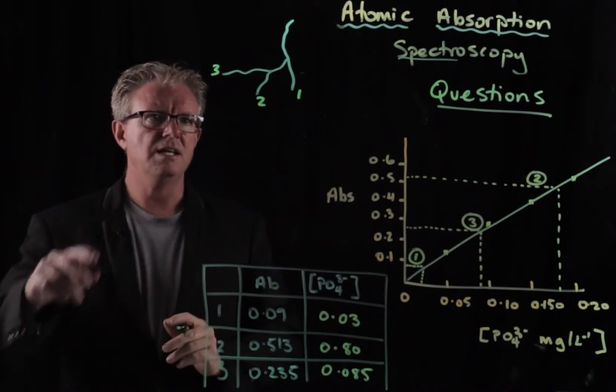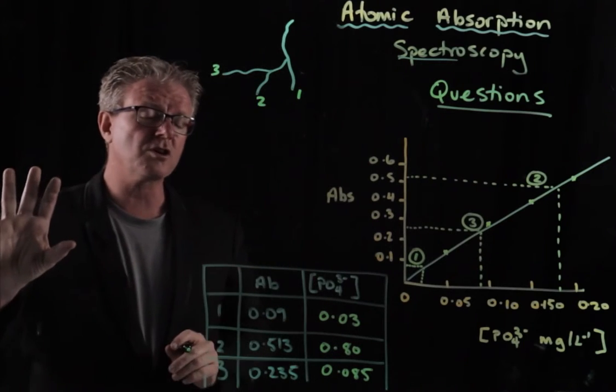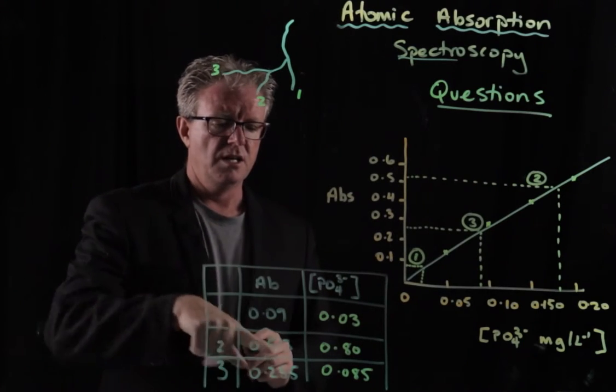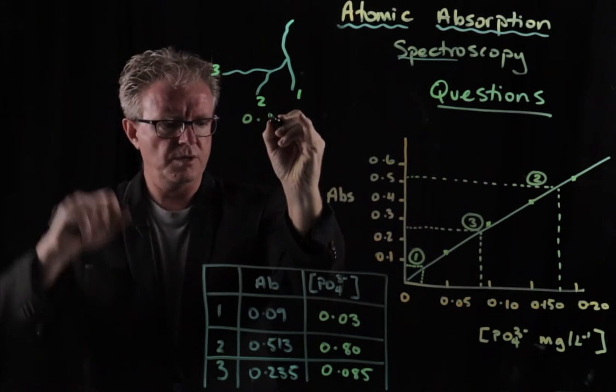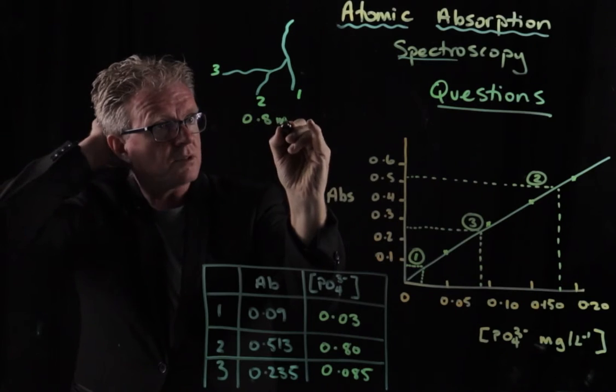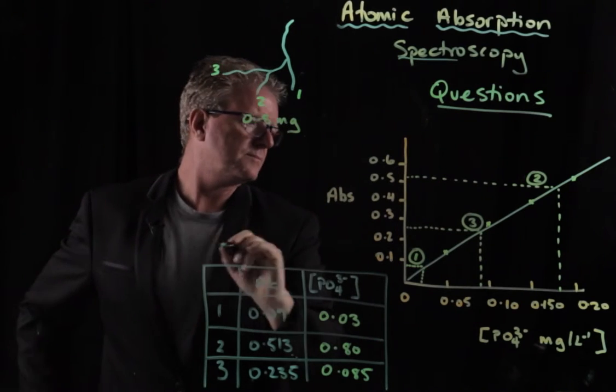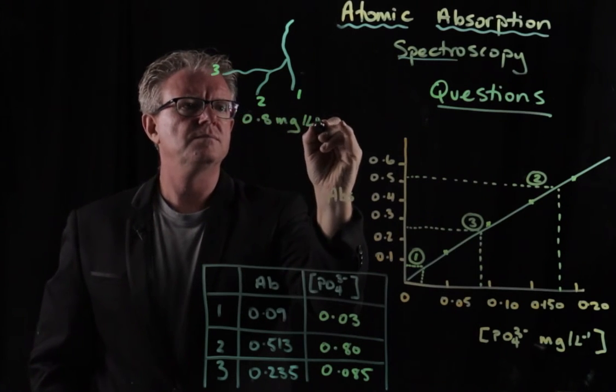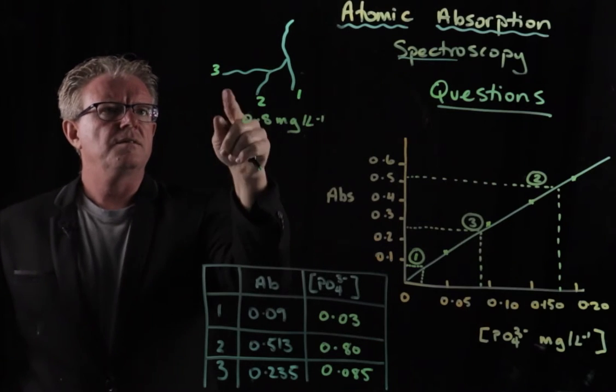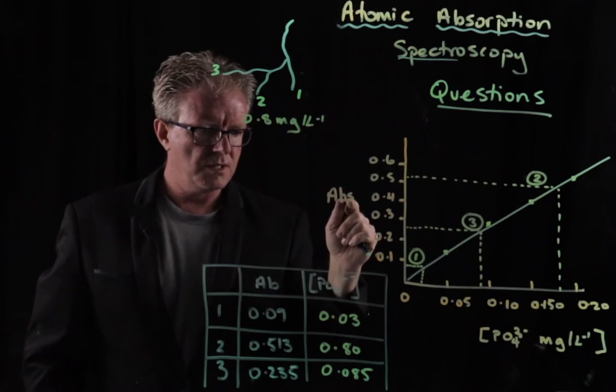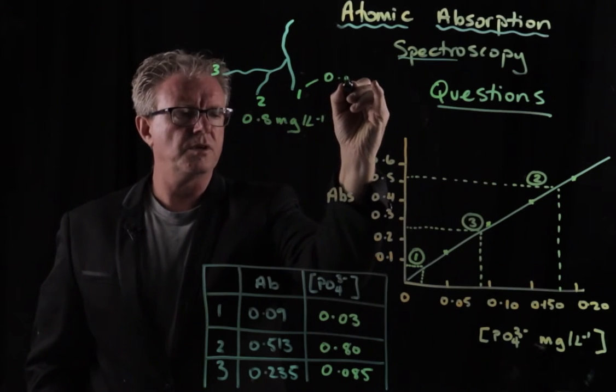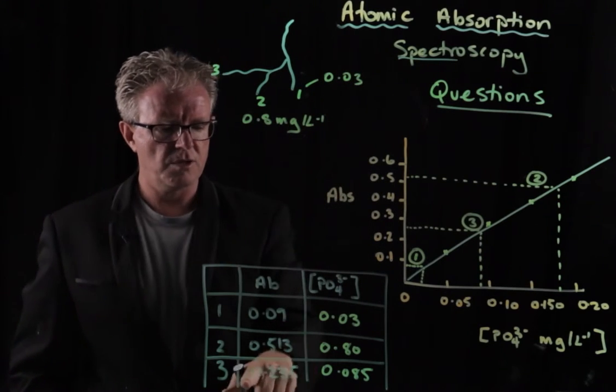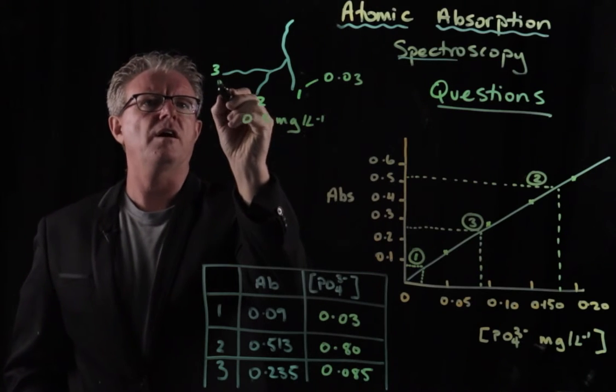So you can see here that in terms of the concentrations of the phosphates, the highest is stream 2, that's the highest value, 0.8 milligrams per litre, parts per million. And stream 1 was the cleanest, at 0.03, and stream 3 was intermediate, 0.085.